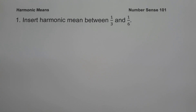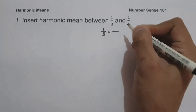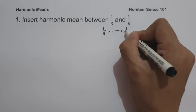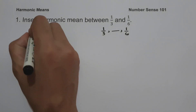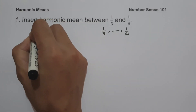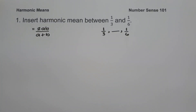On number one, insert a harmonic mean between one-third and one over six. If we are going to illustrate this, we have one-third, followed by the harmonic mean, and then one over six. Since we are inserting one harmonic mean, we are going to use the formula 2ab over a plus b. This formula is applicable only when inserting one harmonic mean between two terms.